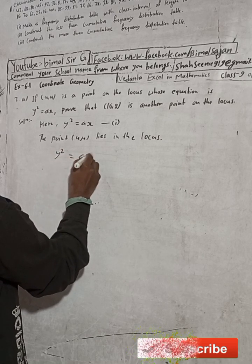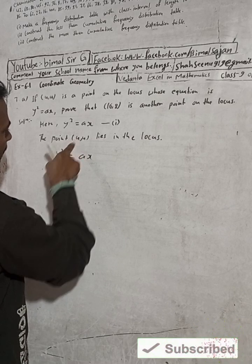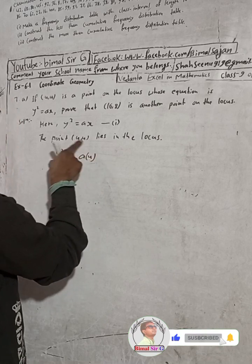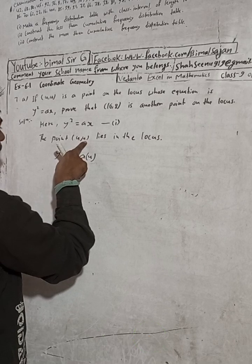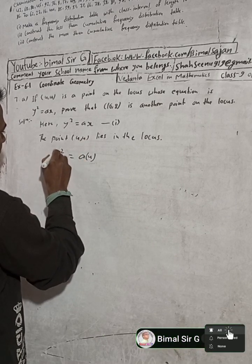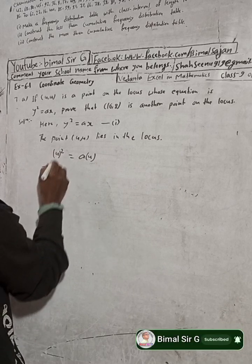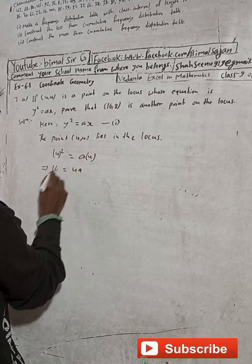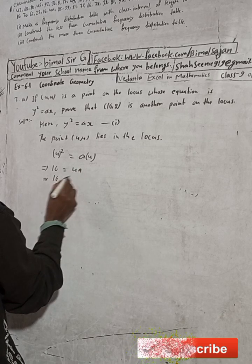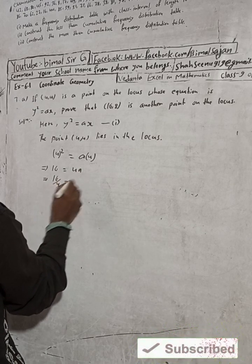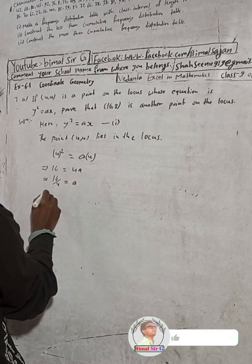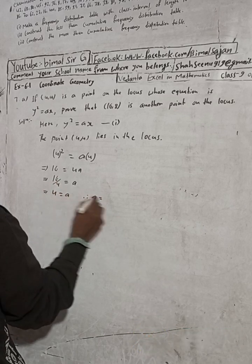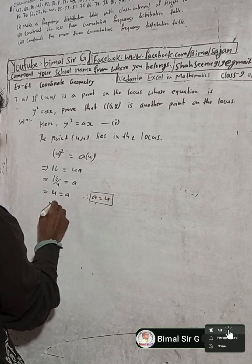So y² = ax becomes: (4)² = a × 4, which gives 16 = 4a. Now this 4 goes to the other side by division, so a = 16 ÷ 4, therefore a = 4.